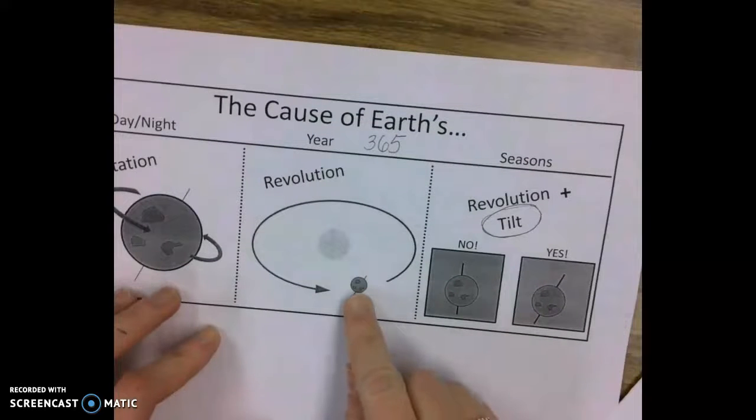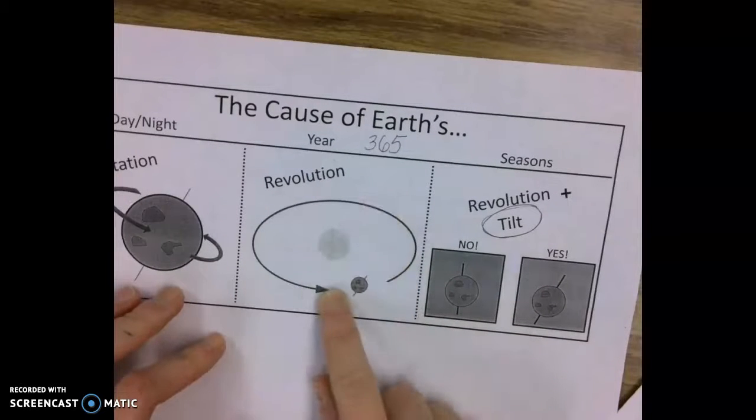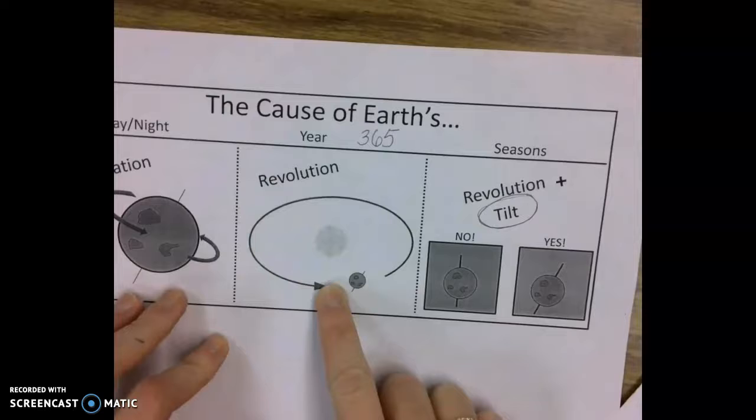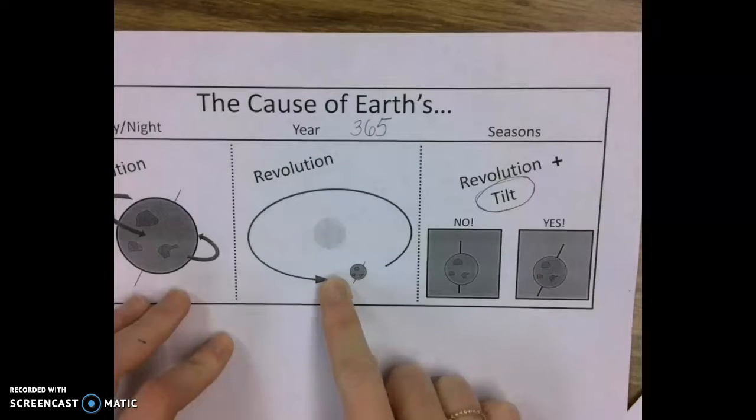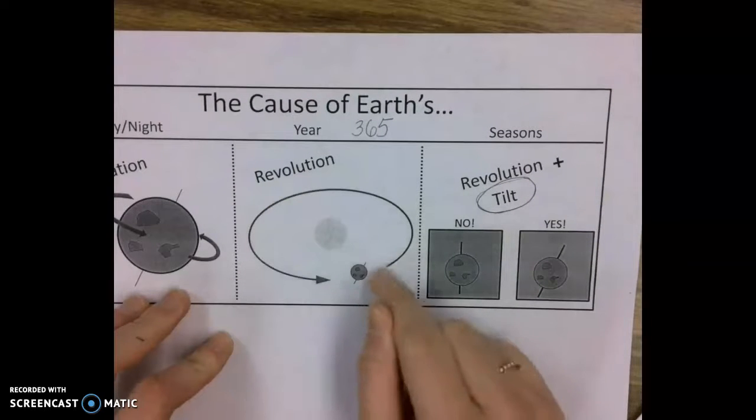When the Earth goes around the sun one full time, do you remember what that's called? It's called a revolution. That's one year.